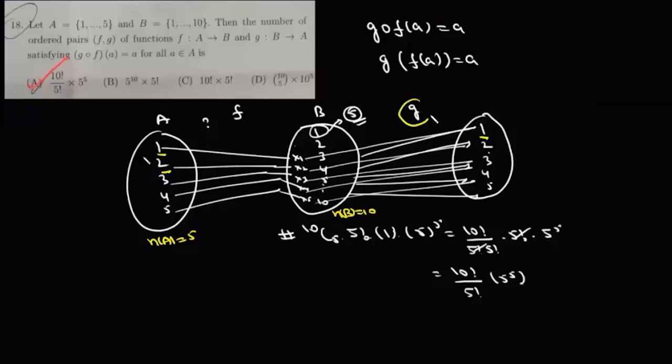Now since g is a function, there must be at least five elements in g that must have images as 1, 2, 3, 4, and 5. Let us suppose those five elements are x1, x2, x3, x4, and x5. So the first step is, of these 10 elements in B, we have to choose five elements which are going to be mapped with A.